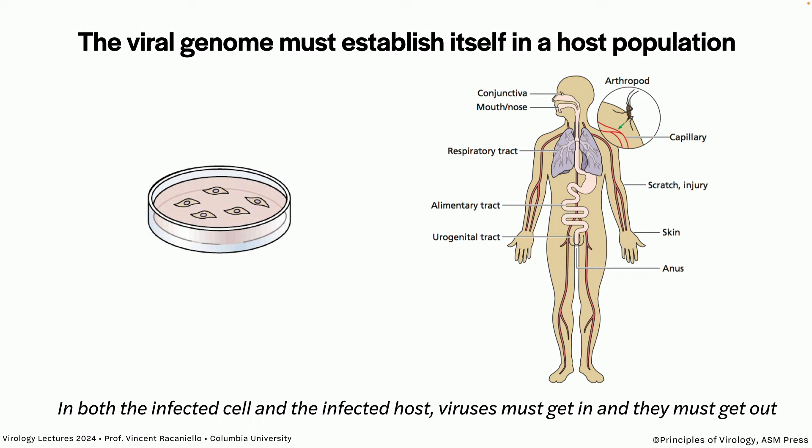That's not something we needed to deal with when we talked about virus infection of cells in culture. All we did was add virus — it would reproduce, kill the cells, and that's the end of it. It doesn't go anywhere else. So obviously there's a big difference in what we've talked about so far and what we're going to talk about for the rest of this class.